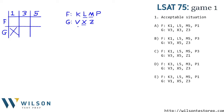LSAT 75, game one. We have a human resources department determining annual bonuses for seven employees: K, L, M, and P in the finance department, and V, X, and Z in the graphics department. They're all going to receive either a $1,000, $3,000, or $5,000 bonus. The first rule: no one in graphics gets a $1,000 bonus, so I've crossed off graphics and $1,000.